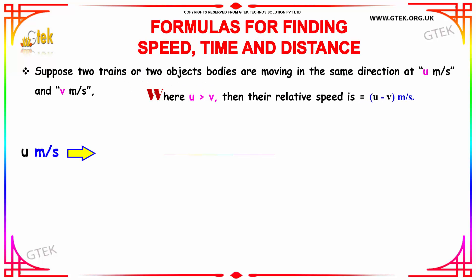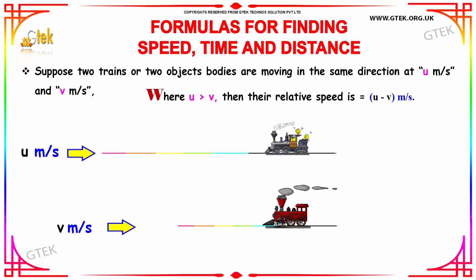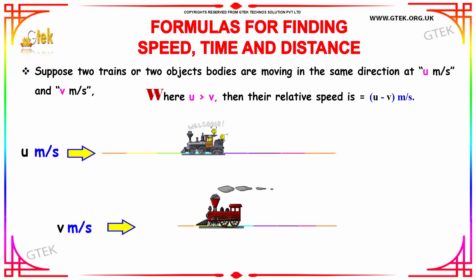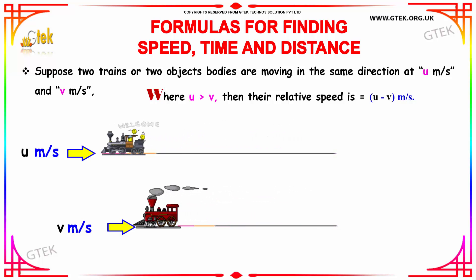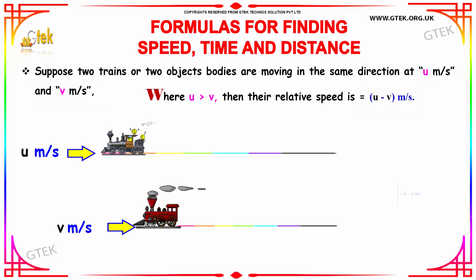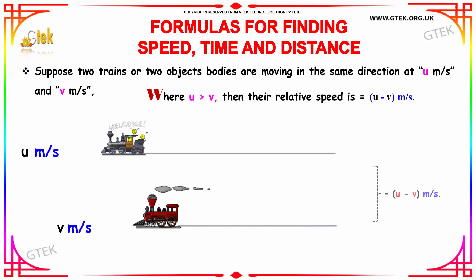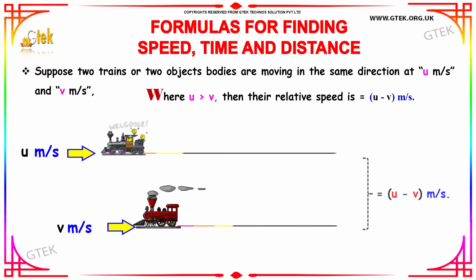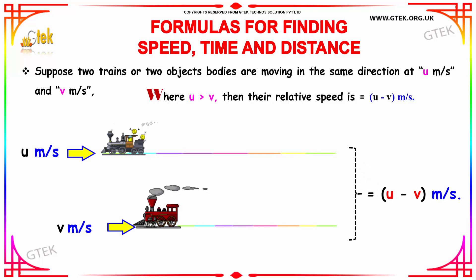Suppose two trains or two objects are moving in the same direction. The relative speed is calculated using u minus v meters per second, where u is the speed of the first train and v is the speed of the second train. So the relative speed is u minus v meters per second.